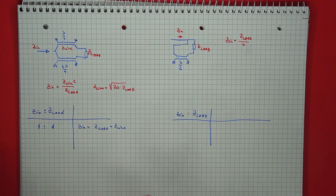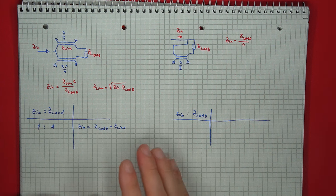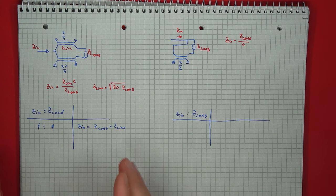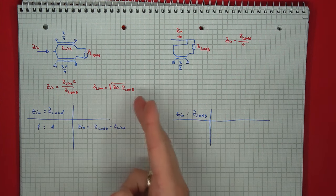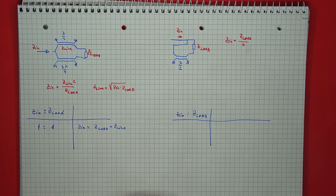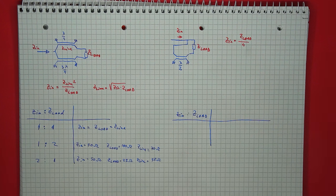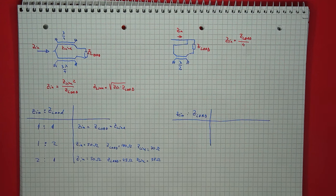What if you need a different impedance ratio? Coming back to the mathematics of the first structure, we notice that when all impedances — input, load, and line — are equal, it behaves as a 1-to-1 balun. But since the line impedance just needs to equal the square root of the input impedance times the load impedance, we can achieve different impedance ratios by choosing different line impedances. For example, a 1-to-2 or 2-to-1 ratio starting from a 50-ohm input can be achieved using 35-ohm or 70-ohm transmission line, and everything will be matched.